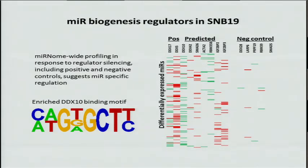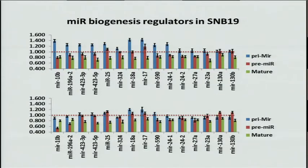Going back to DDX10, we collected the microRNAs that respond to DDX10 inhibition and identified an enriched motif in the precursors of these MIRs. Drilling back down again, we could even identify biogenesis regulators that are very different at the protein level but have very similar signatures in terms of microRNA response, and now we are looking to see if these kinds of interactions are synergistic.